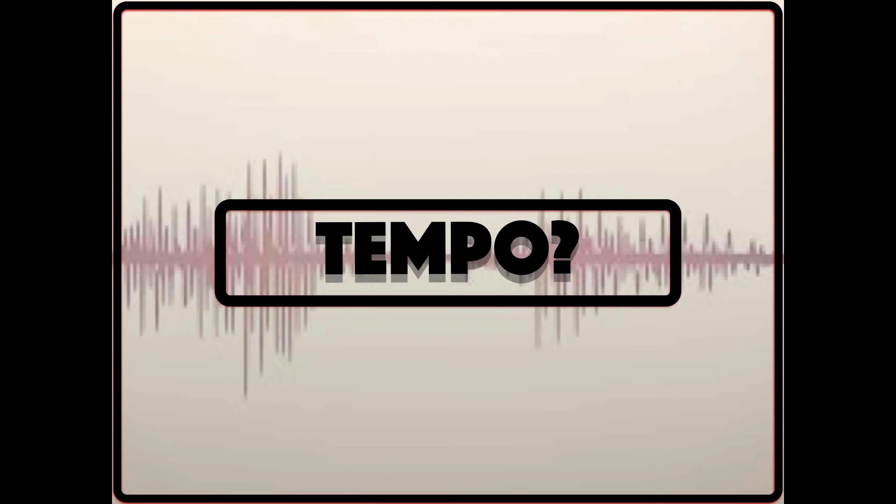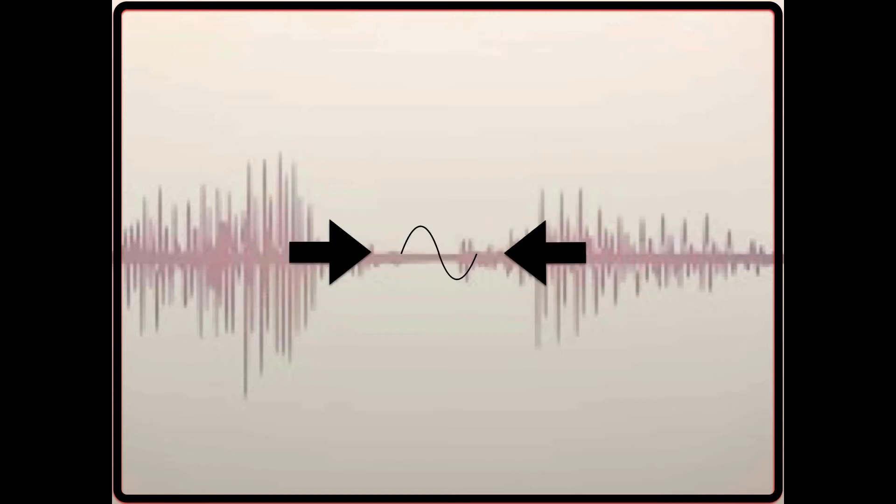Here is something that might seem obvious when I say it, but I have overlooked this for a while. Before you set any compression parameters, think about the tempo of the song. Is it fast or is it slow? A faster song will most likely have a shorter note duration than a slow song.